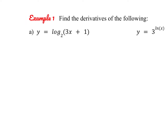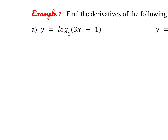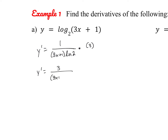Let's try a couple of these together. To find Y prime for y = log base 2 of (3x + 1), we use the chain rule. The outer function is log base 2, giving 1 over (3x + 1) times the natural log of 2. Then to complete the chain rule, we multiply by the derivative of the inner function, which is 3. So Y prime equals 3 over (3x + 1) times the natural log of 2.